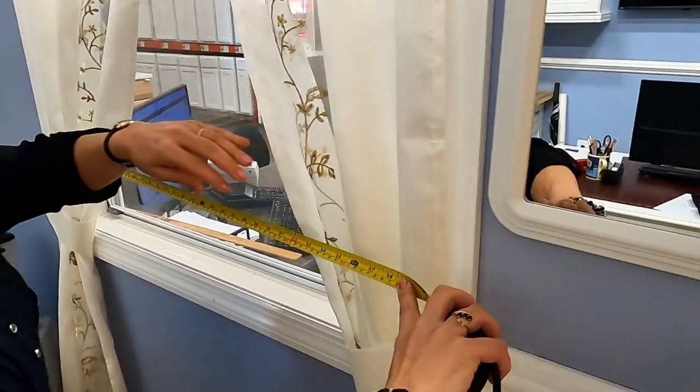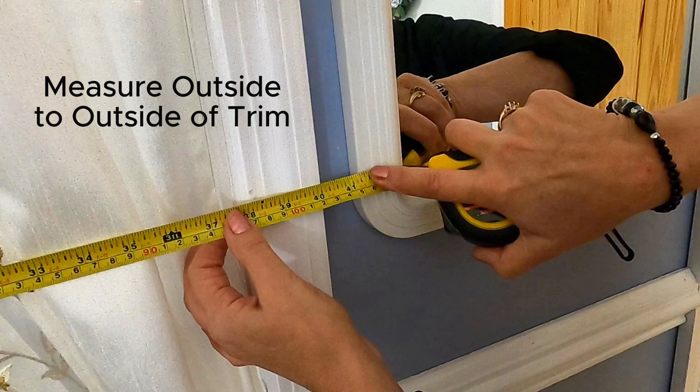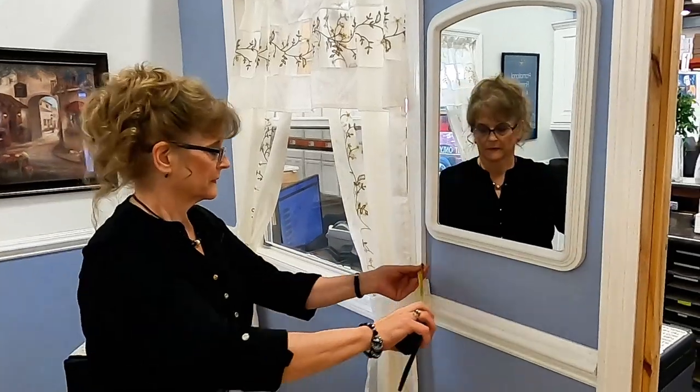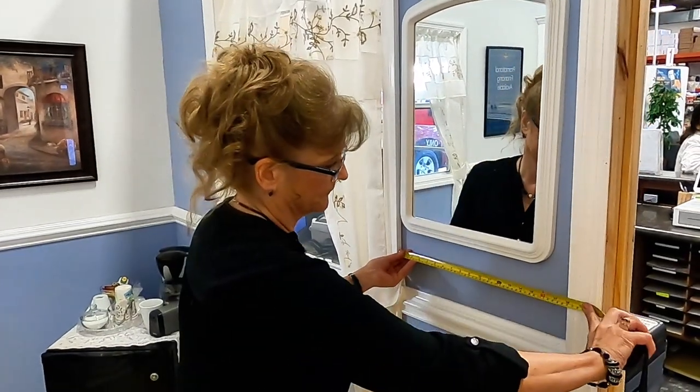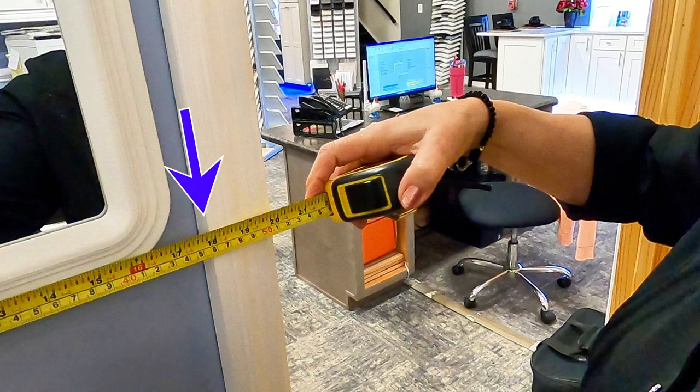When you measure a window, you measure from the outside of the trim to the outside of the trim, and that shows 40 and an eighth there. Now you're going to go from trim to trim to the door there, and that's 17 and three quarters.